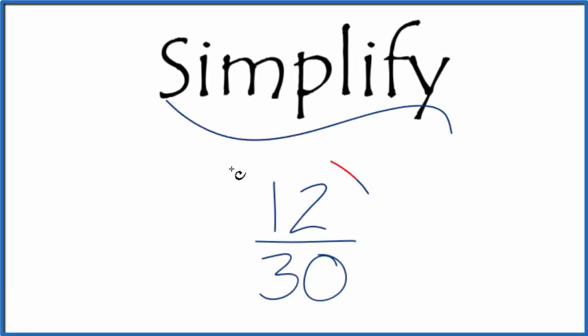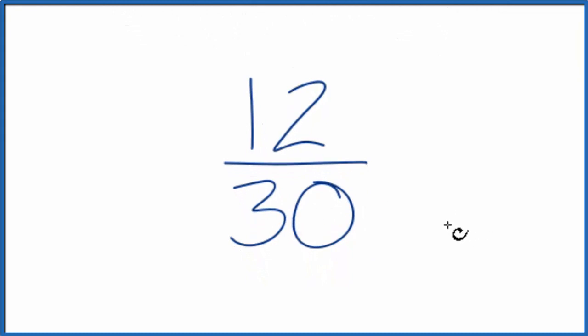Let's simplify the fraction 12 thirtieths. What we're really trying to do is find another fraction that's equal to 12 thirtieths, has the same value, but is in lowest terms. So we're looking for common multiples of 12 and 30.